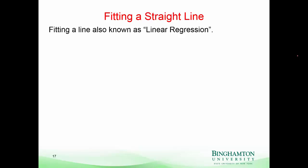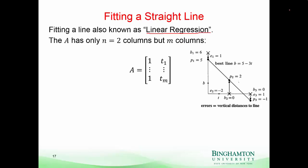Let's look at a couple of cases, then we'll talk about how much bigger this idea is. Fitting a straight line — statisticians like to call this linear regression, although they use that term for more than just fitting a straight line. Here's the picture for our three-point example. When we fit a straight line, one column of A will be all ones and the other column will be the points along the horizontal axis where our data was measured. The B vector holds the actual measurements: 6, 0, and 0.